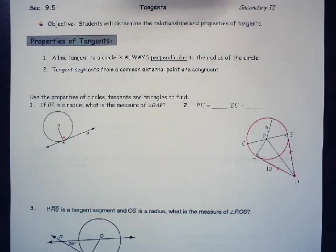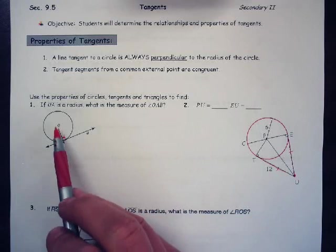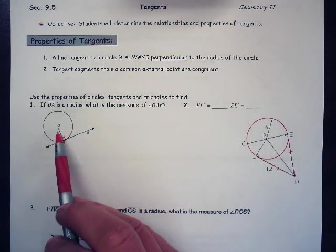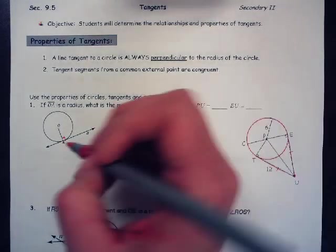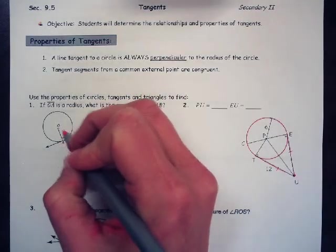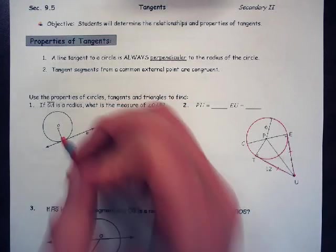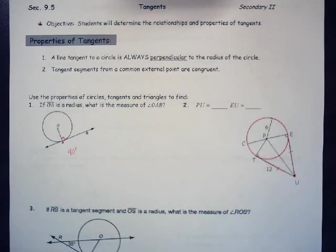So let's practice this. Use the properties of circles, tangents, and triangles to find OA. If OA is a radius, what is the measure of angle OAB? Well, that's pretty easy. That one's just 90 degrees because OAB is this angle right here.